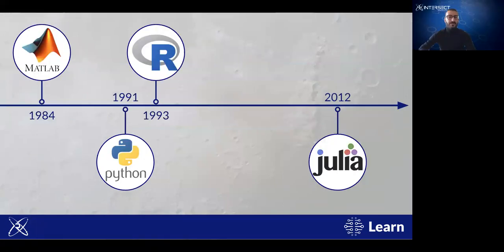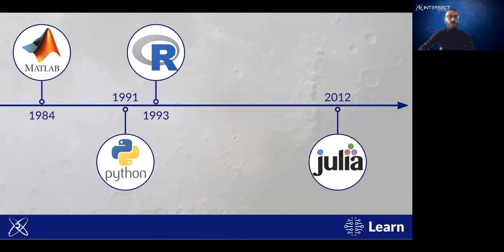A bit of history about these programming languages. You may have heard of them recently in research, but they're not newly developed — except for Julia. MATLAB is the oldest, followed closely by Python and R. Then, after almost two decades, we have Julia, which we'll talk about.